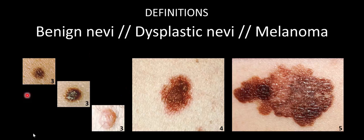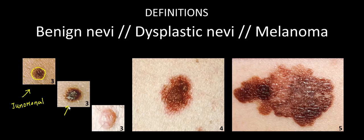Let's start on the left with benign nevi and work our way toward the right. When talking about benign nevi, there are three main groups. The first type are junctional nevi, characterized by a well-demarcated border and a very flat-looking appearance with very even pigmentation. This reflects the fact that histologically, these melanocyte clusters are located primarily in a very symmetric, orderly fashion along the dermal-epidermal junction, giving us this very pigmented, even tone.